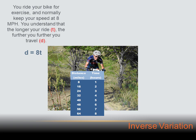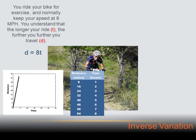Now let's create a chart to show how the t values and d values vary. If we ride our bike for one hour at eight miles per hour, we'll travel eight miles. If we ride for two hours, we'll have gone sixteen miles. As time increases, distance increases, and when we graph that, it's a straight line that goes through the origin.